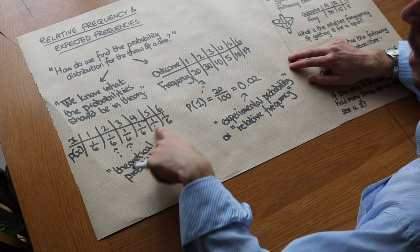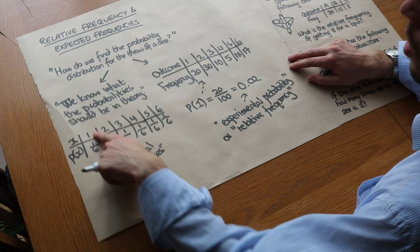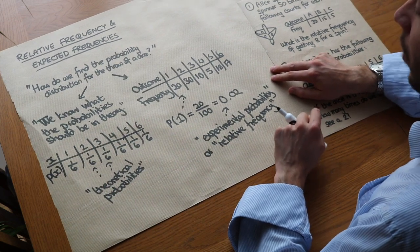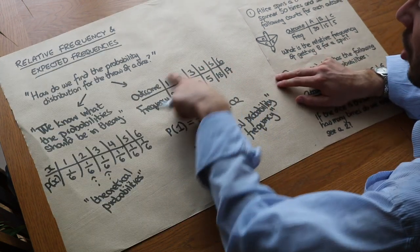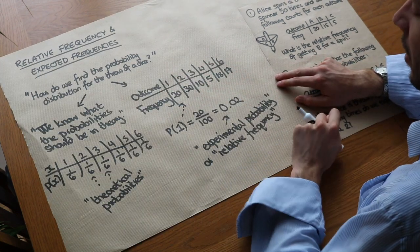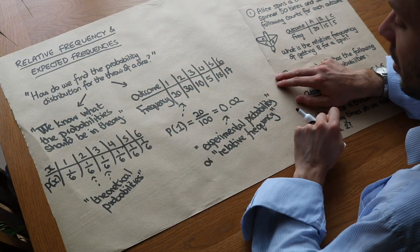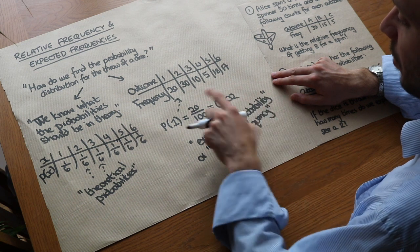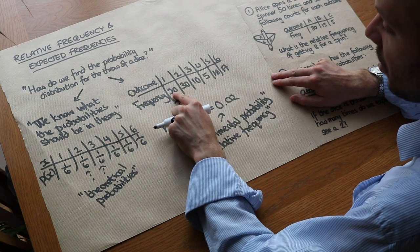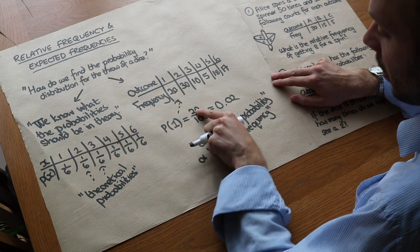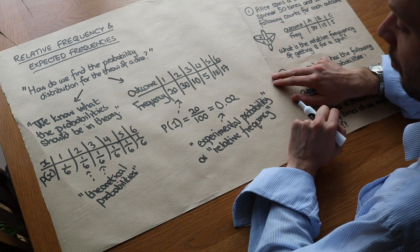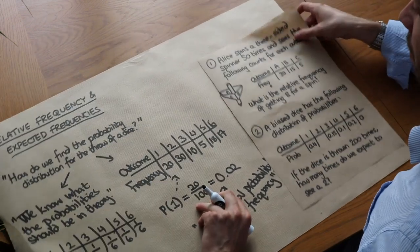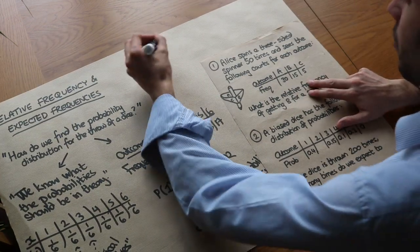So we've got these two different methods. Theoretical probabilities is when we know what the probability should be in theory. Or if we don't know, we just roll the dice a large number of times — in this case 100 — and then estimate the probability based on the count, taking each count divided by the total number of times we threw the dice. Let's use that to help us answer these questions.